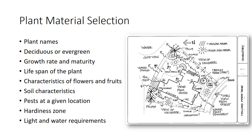Whether the plant is perennial, biennial, or annual determines whether it needs to be replaced annually, biennially, or in the case of a perennial, not for a number of years. It is important to know the special features of flowers and fruits—for example, the fruits of the female ginkgo have a foul odor that is not recommended for a residential landscape. Color can come from leaves, flowers, bark, fruits, and inanimate objects in the landscape. Plants are selected for their year-round color, not just for their flowering colors.